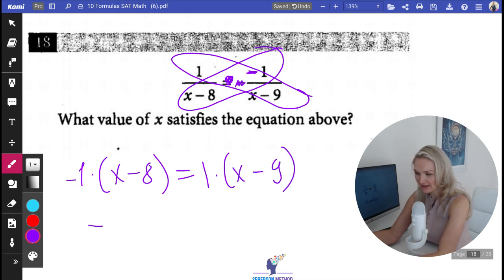Let's go ahead and distribute. We're going to have negative x plus eight is equal to x minus nine.